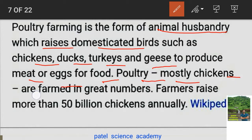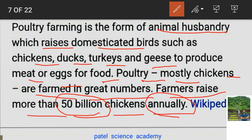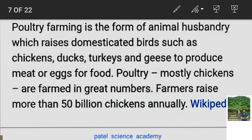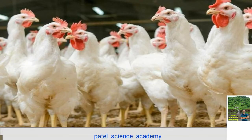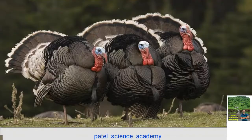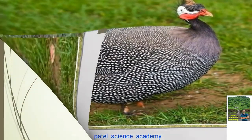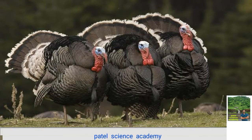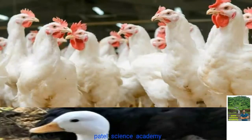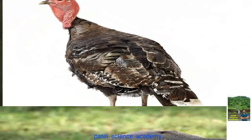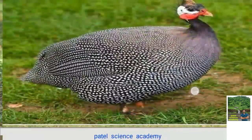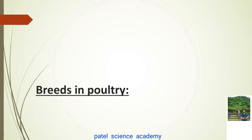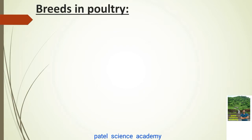Poultry farming mostly involves chickens, which are farmed in great numbers — farmers raise more than 50 billion chickens annually using this technique. Chickens, ducks, turkeys, and geese are all domesticated for getting their eggs, meat, and feathers.